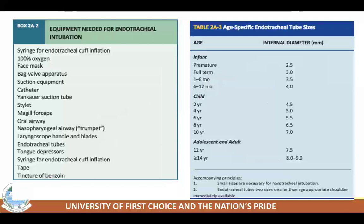Equipment required for the procedure includes a syringe for endotracheal cuff inflation, 100% oxygen, face masks, bag-valve apparatus, suction equipment, capnography, stylet, Magill forceps, and oral airway. The endotracheal tube size should be age-specified, though sizing may vary somewhat in individual patients.